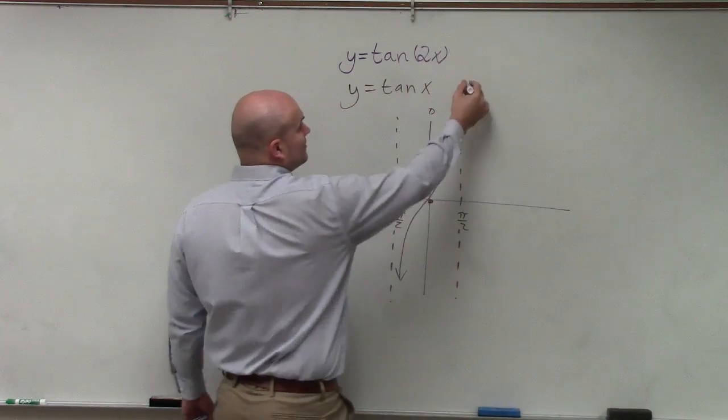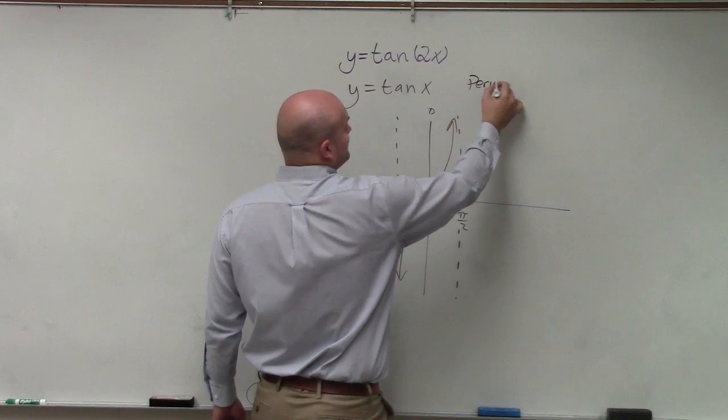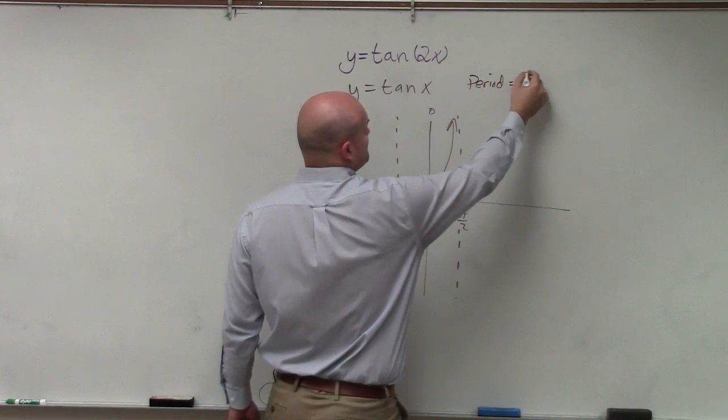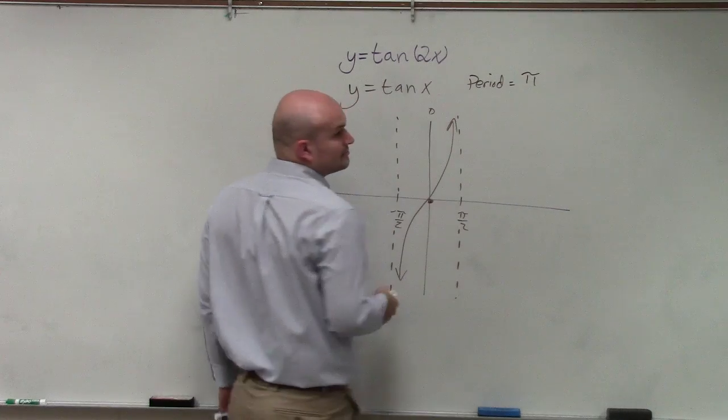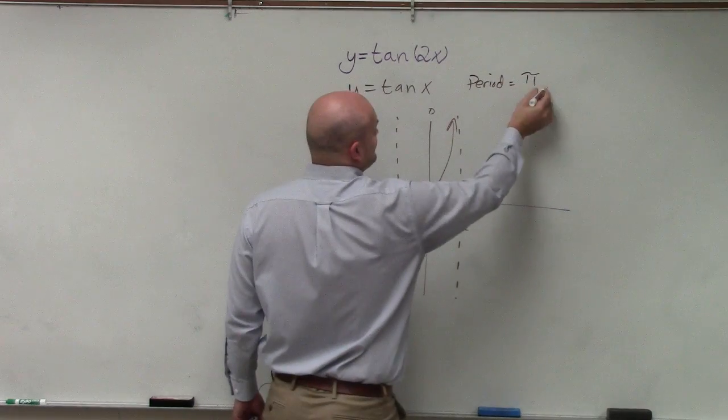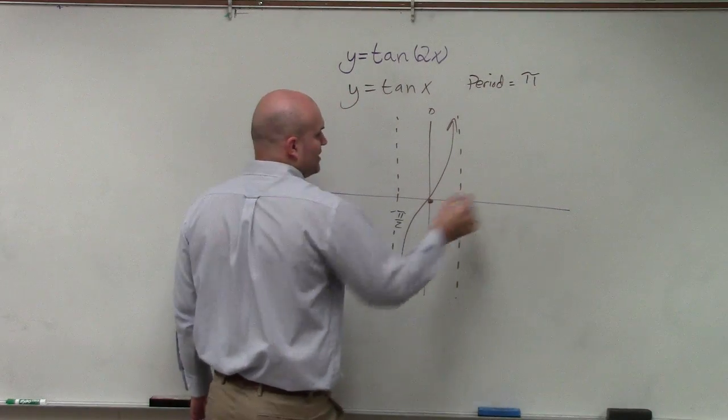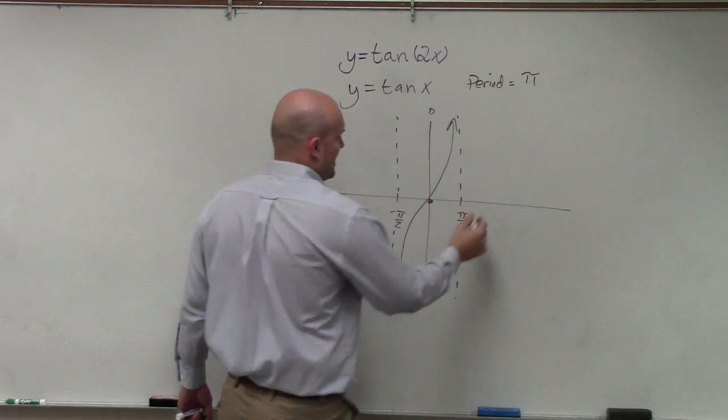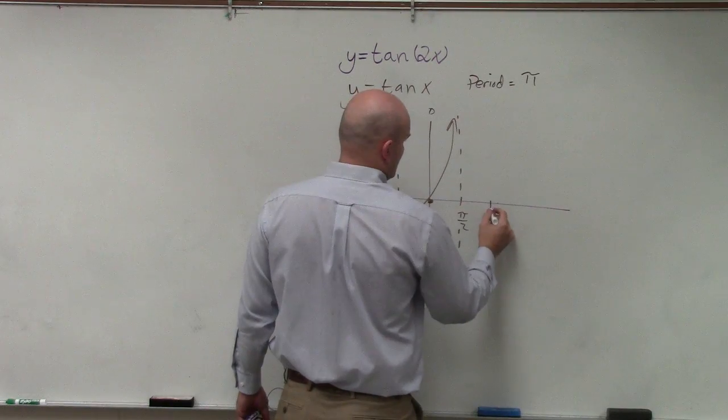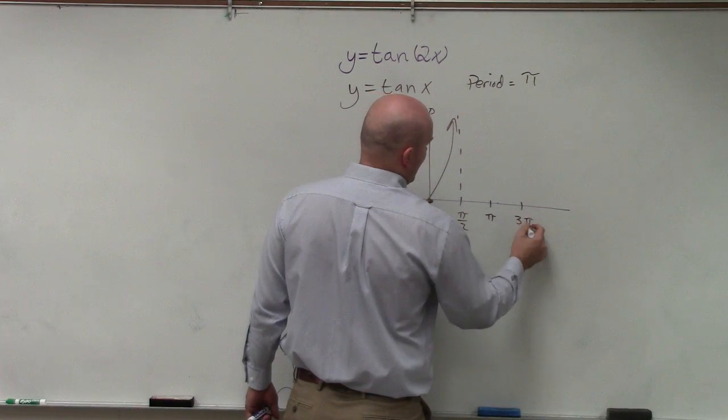Then the period—remember there is no amplitude—so the period was pi, right? So therefore, to go to the next one, I would add, this would be at pi, and this would be at 3 pi halves.